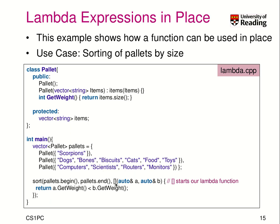The lambda sort function takes two arguments. We can make them of type auto, because the compiler can automatically deduce what type they should be — which is a great use of type inference. And in the body we say a.getWeight() is smaller than b.getWeight(), so we sort by weight. Remember, the weight of a pallet is the number of items on it. So we get as a result: first 'scorpions', then 'computers, scientists, routers, monitors', then the second pallet, and last the pallet with the most items.